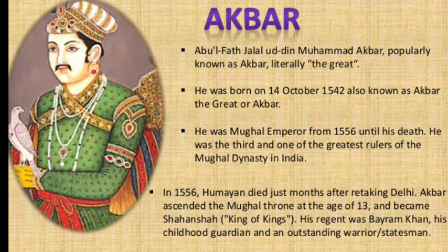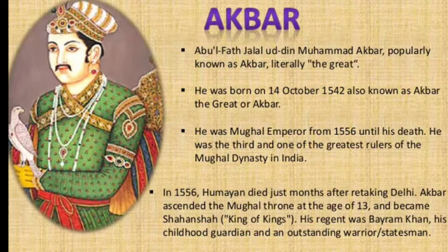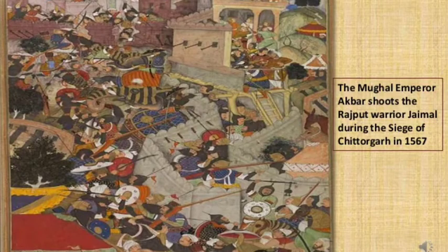Akbar's full name was Abul Fath Jalal-ud-Din Muhammad Akbar, meaning 'Great.' He was born on 14th October 1542 and was also known as Akbar the Great. He was the Mughal Emperor from 1556 until his death and was the third and one of the greatest rulers of the Mughal dynasty. In 1556, when Humayun died, Akbar ascended the throne at the age of 13 and became Shahanshah — meaning King of Kings. A picture shows Akbar shooting the Rajput warrior Jamal during the siege of Chittorgarh in 1567.